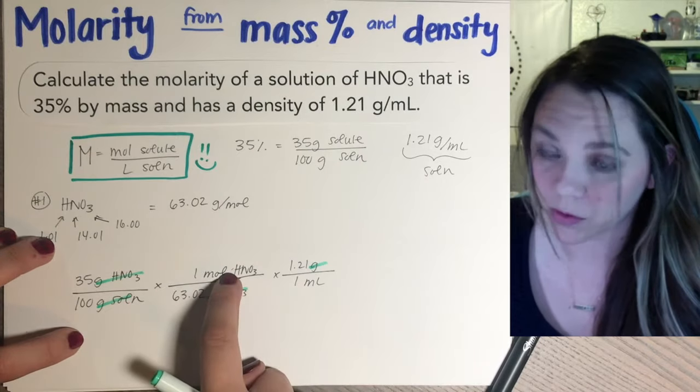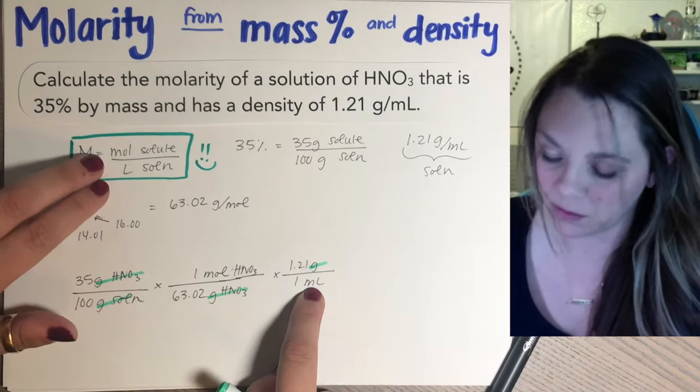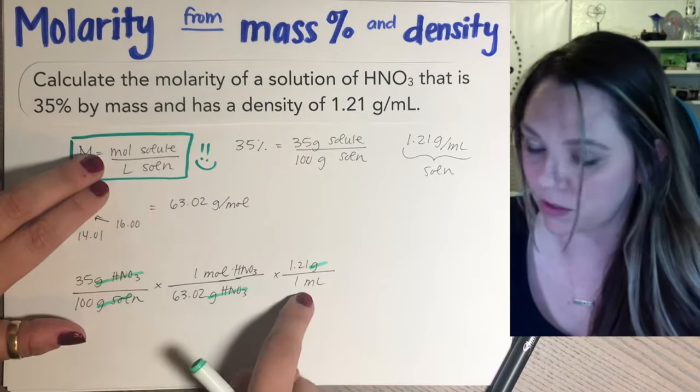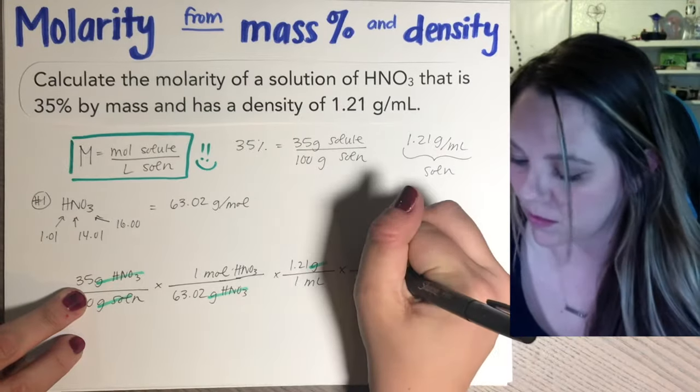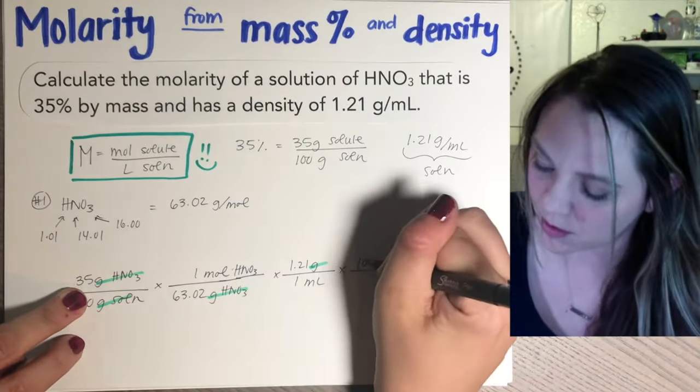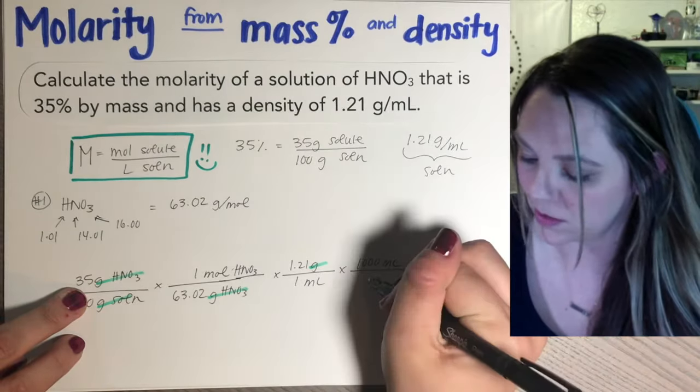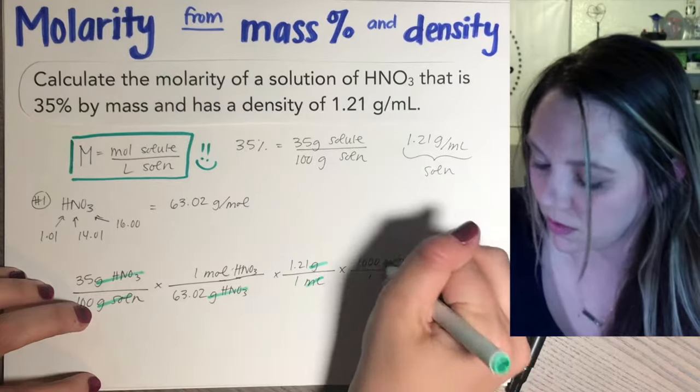So now on the numerator, I have moles and on my denominator, now I have milliliters. So we're close, right? We want moles per liter, not moles per milliliter. So one last step is to say and convert your milliliter into liters. So a thousand mils is one liter. Milliliter and milliliter cancel.